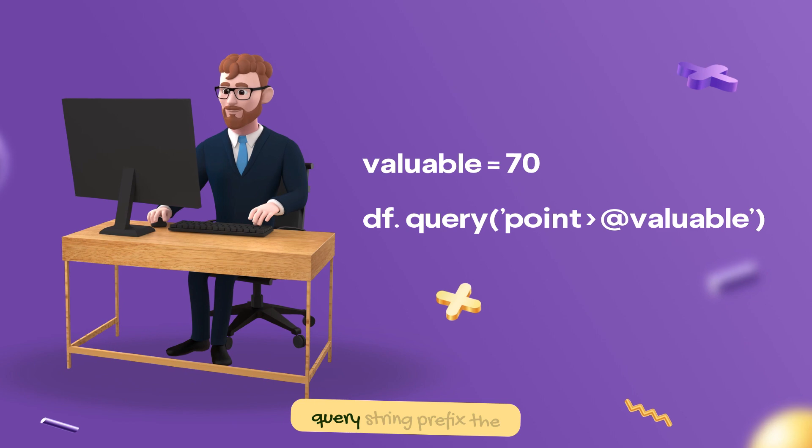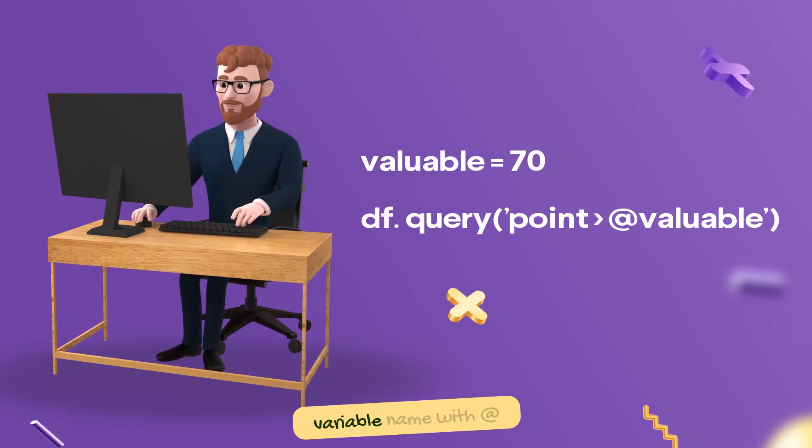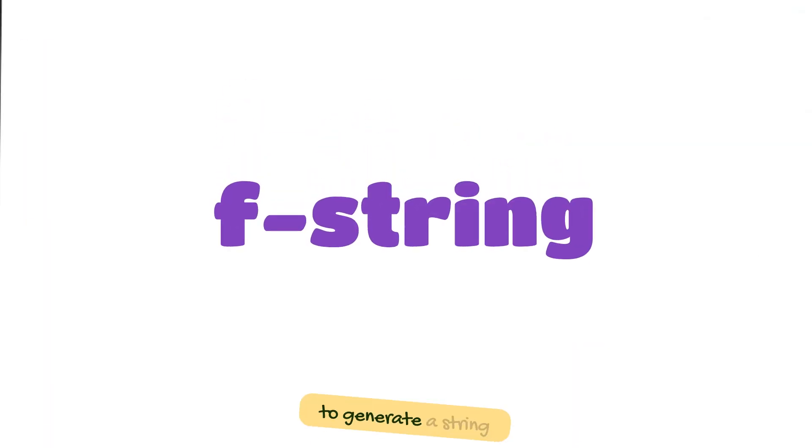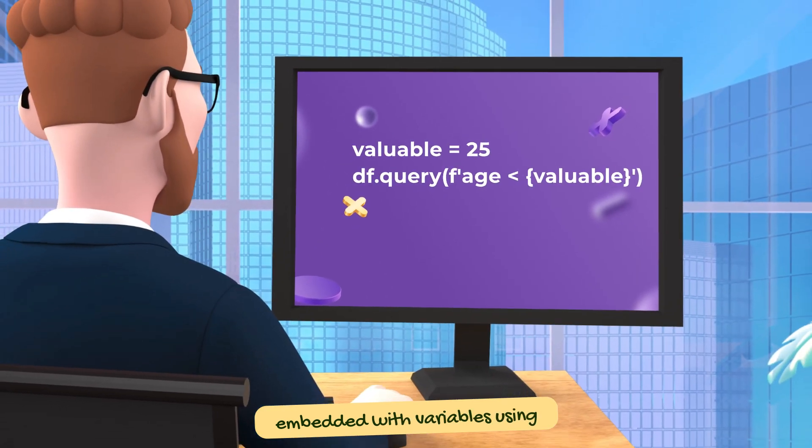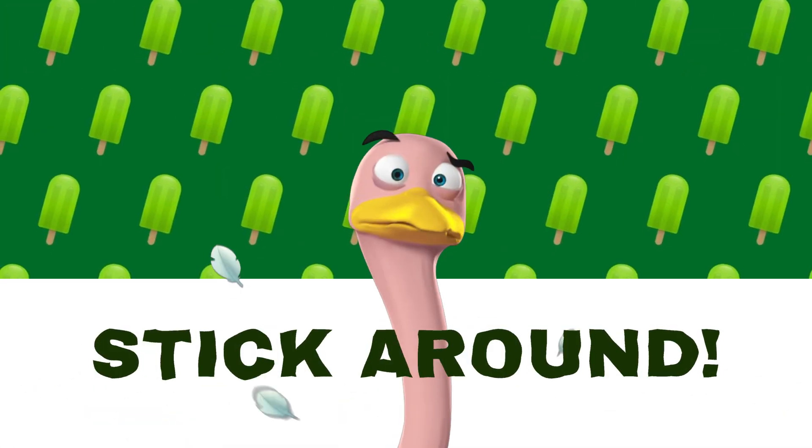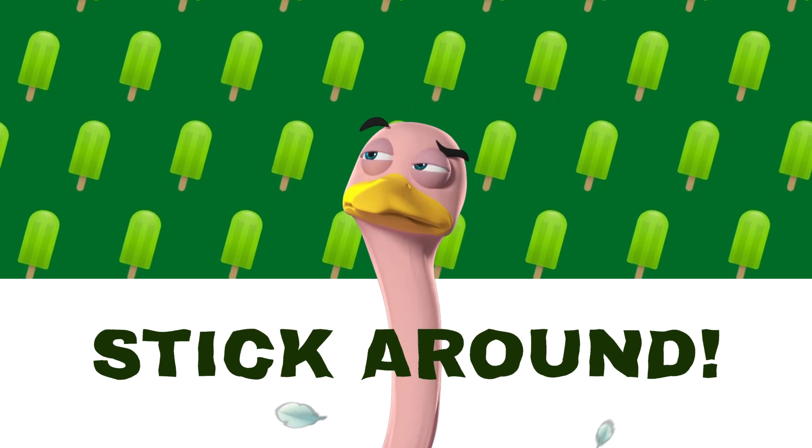To use variables in query strings, prefix the variable name with @. It is also possible to generate a string embedded with variables using f-strings. At the end of the video, we will look at the differences between these two methods and how to use both in one code line.